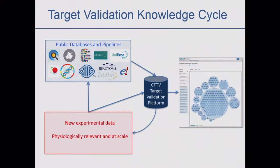The program really has two sides. There's an experimental data generation side, which I'm not going to talk about — Jeff Barrett will cover that tomorrow. And then there's a bioinformatics side of putting together public databases and pipelines that feed into a target validation platform through which we release the data. Eventually, as the experimental data comes in, we hope this creates a virtuous cycle into the platform, and then hypotheses feed back into the experimental data as well.